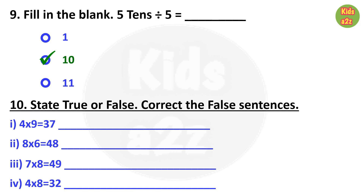For Question 10, the first one is 4 multiplied by 9, which equals 36, but here 37 is given, so this statement is false. We also need to write the correct one: 4 multiplied by 9 equals 36. Similarly, we need to solve all the other problems also.